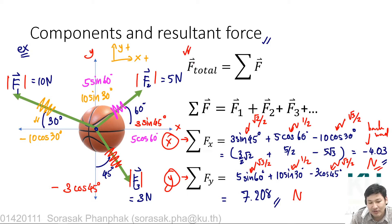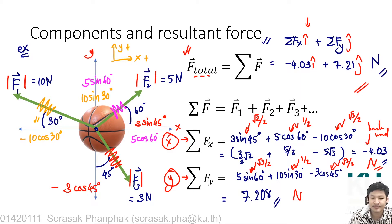If you'd like to have the resultant force in vector form, you can have sigma Fx with the i bar telling that it's pointing toward eastward direction, plus sigma Fy in j direction, whether upward or downward due to the sign. So you get minus 4.03 i plus 7.21 j. This is your resultant force in Newtons. This is how you can sum up or add up all the forces acting on the object of interest and see what is the resultant force.